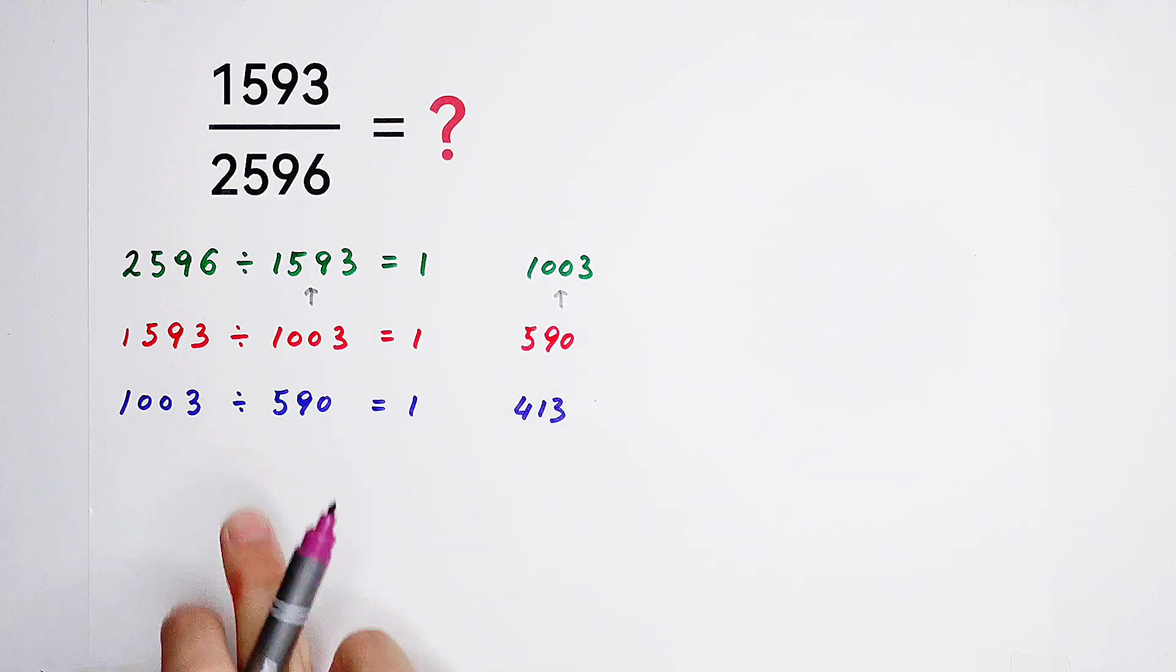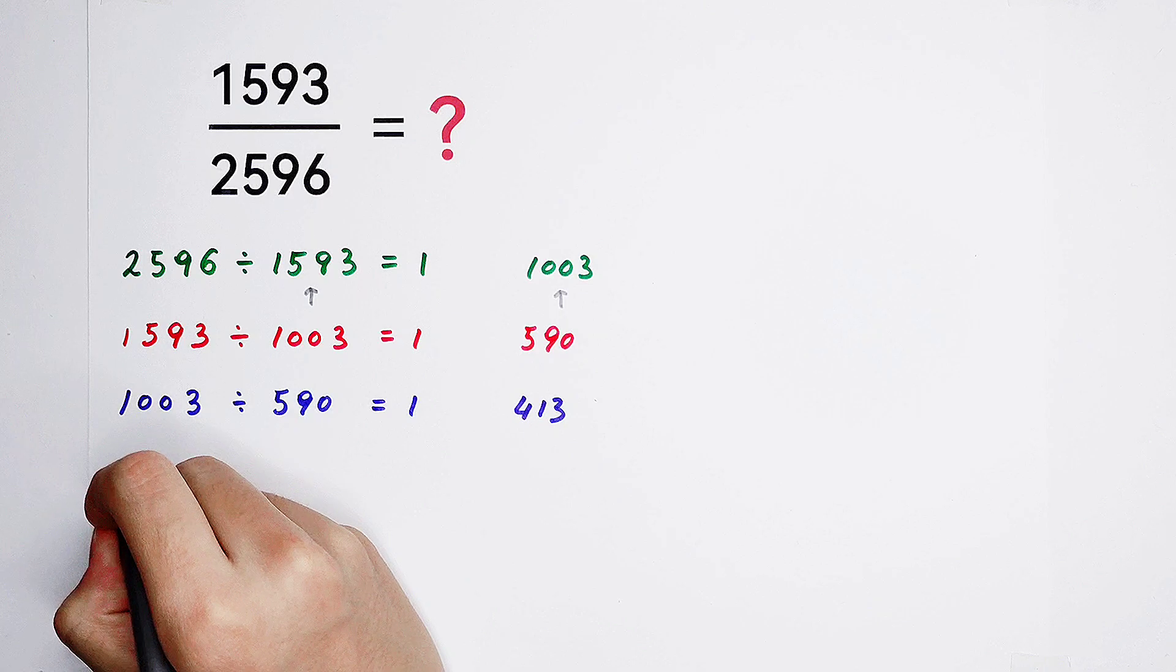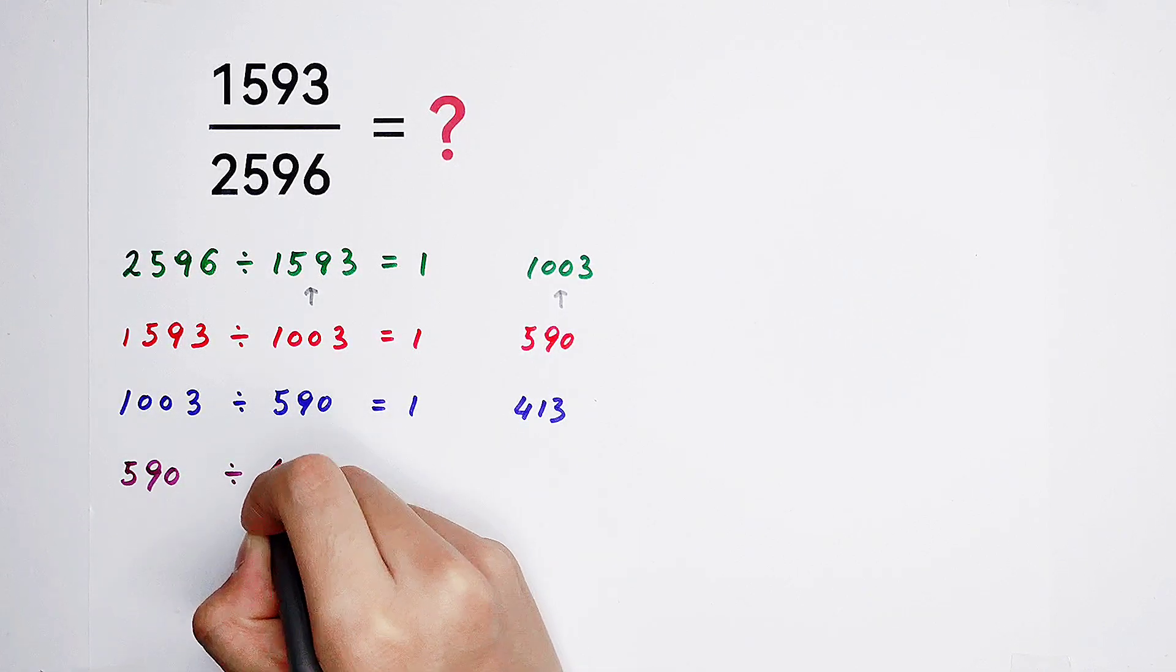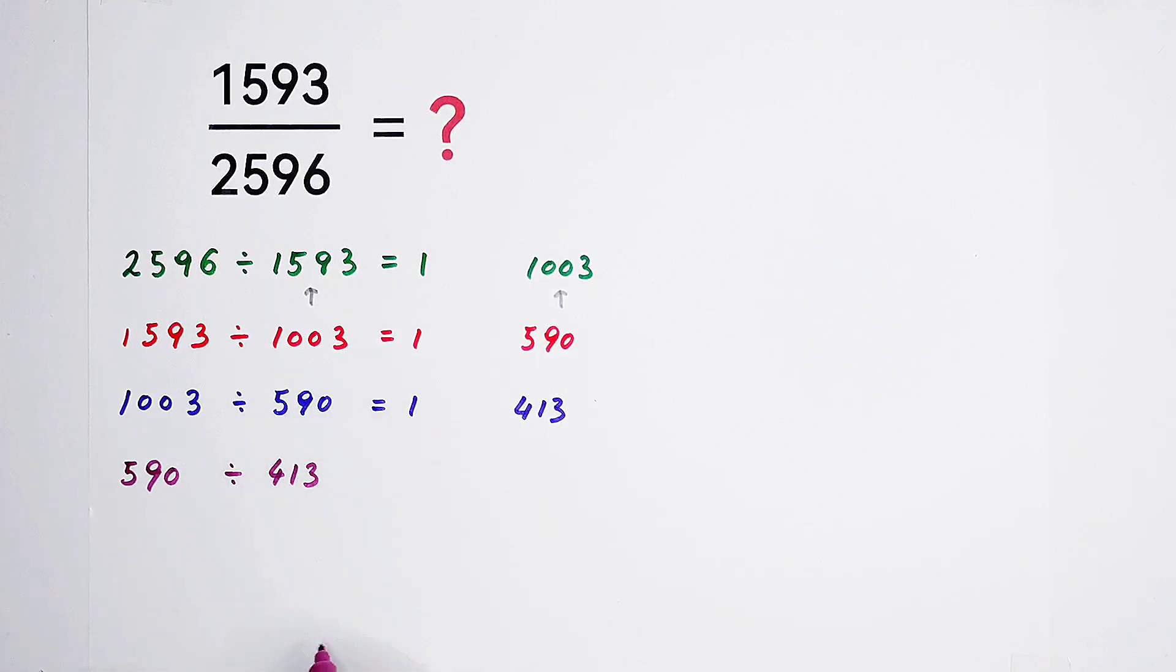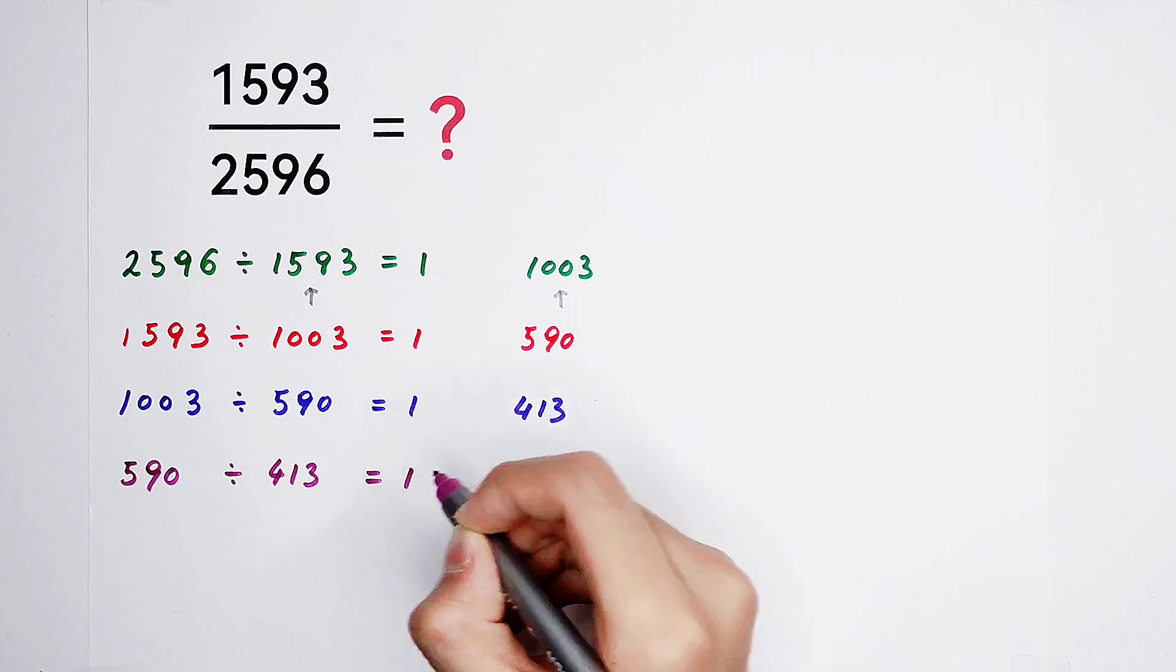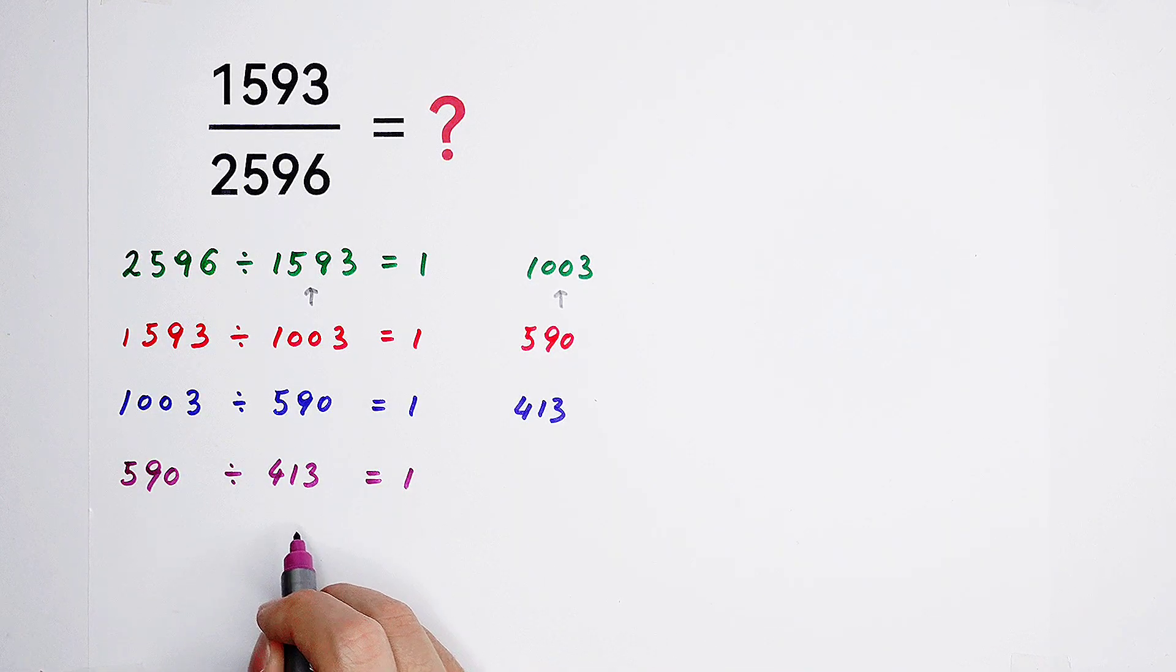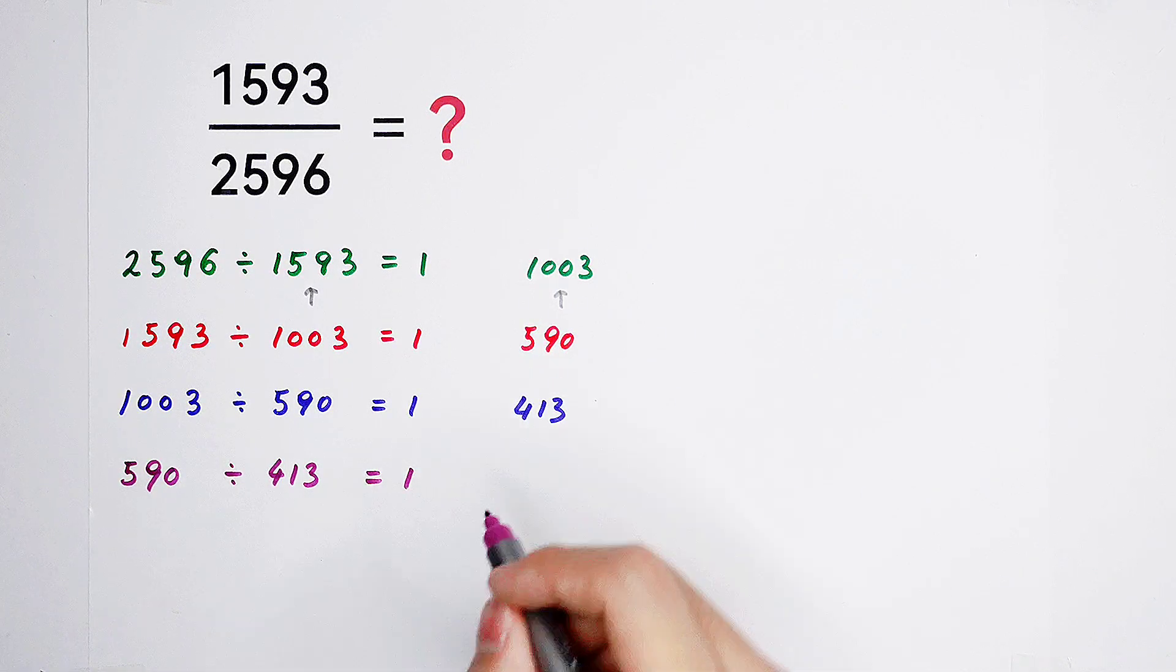Then, compare these two numbers. Of course, 590 is larger. So, let it divide by 413. The remainder is, we don't know, but the quotient is 1. 590 minus 413. It is 177.